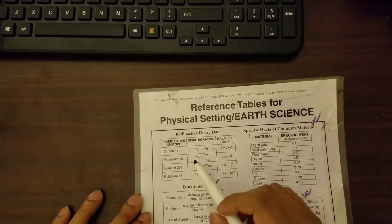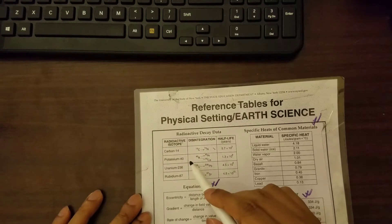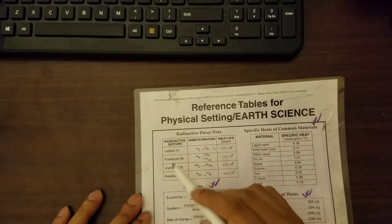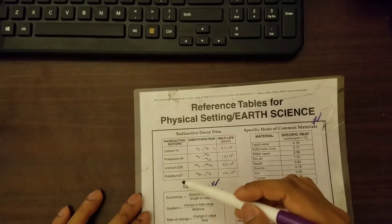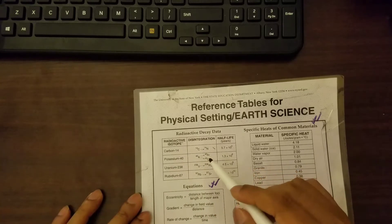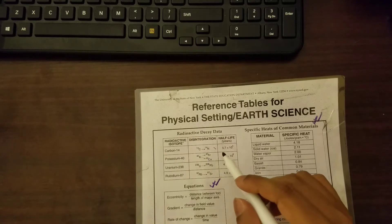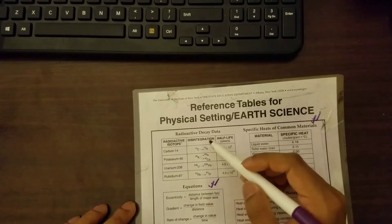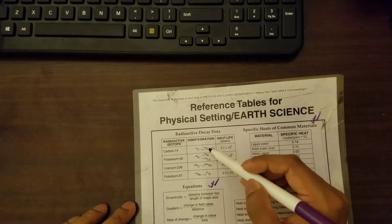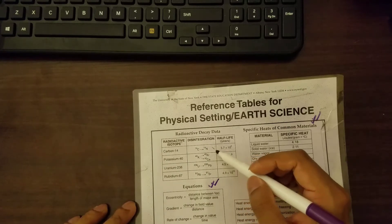So first of all, what does radioactive mean? Radioactive elements, as you can see, there are carbon, potassium, uranium, rubidium. They actually release nuclear particles and energy and they become a non-radioactive element.